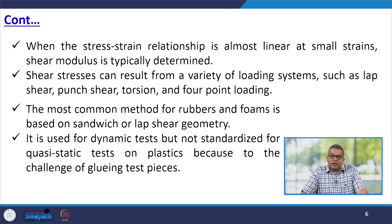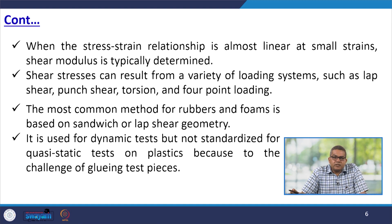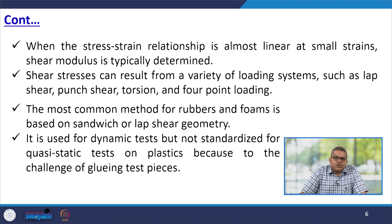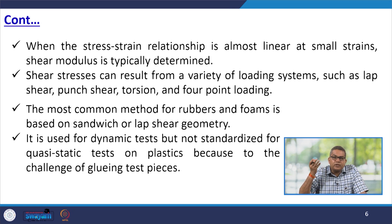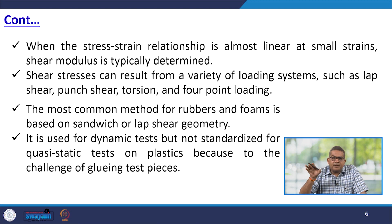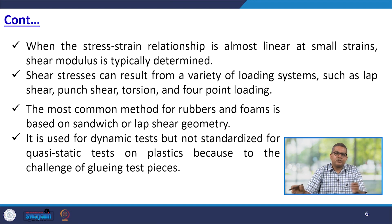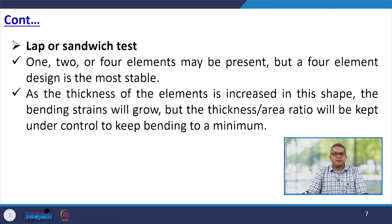When the stress-strain relationship is almost linear at small strain, shear modulus is typically determined. The shear stresses can result from a variety of loading systems like lap shear, punch shear, torsion, and four-point loading. The most common method for rubber and foam is based on sandwich or lap shear geometry. It is used for dynamic tests, but not standardised for quasi-static tests on plastics because of the change of gluing test piece.